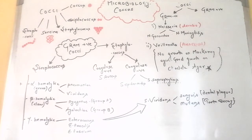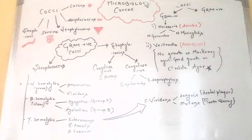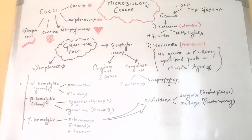Strep A infections include throat infection and tonsillitis, and skin infections such as impetigo — a skin infection causing sores, blisters, or crusts to develop on the skin — and cellulitis, an infection of the deeper layers of the skin causing the affected area to quickly become red, painful, swollen, and hot. Middle ear infection often causes earache, high temperature, and some temporary hearing loss.